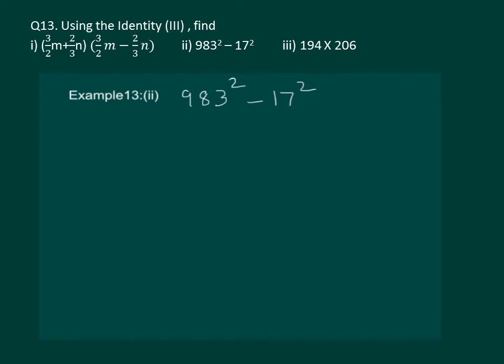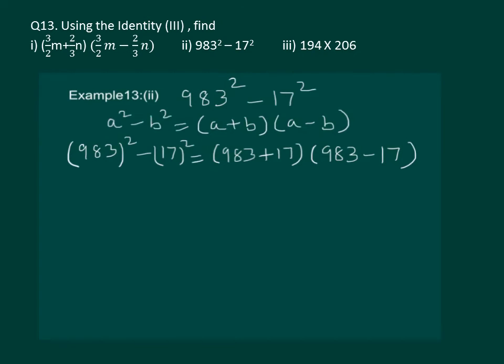Please see the question on the slide. It can be done much easily if we use our third identity reversely. We can use a square minus b square is equal to a plus b into a minus b, which is our third identity reversely. Let us substitute a as 983 and b as 17. Then, we get 1000 multiplied by 966 which will give us 966,000 as the required answer.